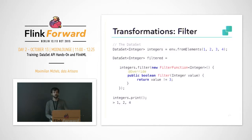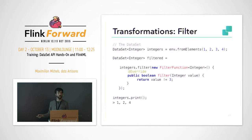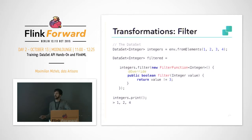A common transformation you might use is the filter function. The filter function takes an input and signals to Flink whether to keep this input in the dataset or not. Here, for example, we consider all values that are not equal to three. So if we have input one, two, three, four — it's going to output false when three goes in, and three will be excluded from the dataset.